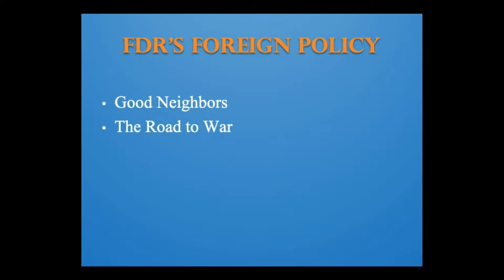When General Francisco Franco in 1936 mounted a rebellion against the democratically elected government of Spain, Hitler and Mussolini sent men and arms to support him. In 1939, Franco won and established another fascist government in Europe. Hitler annexed Austria and the Sudetenland, a German area of Czechoslovakia, and soon thereafter invaded and annexed all of that nation too.